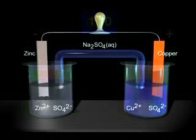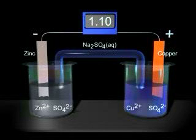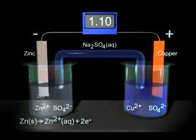When we replace the light bulb with a voltmeter, we find that the cell has a potential or voltage of 1.1 volts. The copper electrode is the positive electrode, and the zinc electrode is the negative electrode.